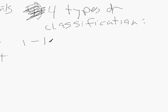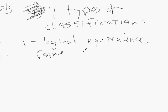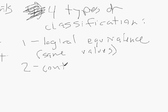The first type is what we call logically equivalent. Logical equivalence is essentially when both statements have the same truth values, line by line. One thing to note is that when you compare two different statements, you need to make sure they have the same number of variables — otherwise it's very difficult, if not impossible, to compare them.